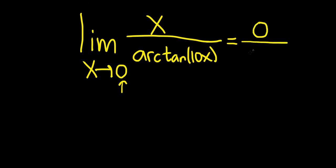And if you do it on the bottom, you get the arctan of ten times zero, so the arctan of zero. So you just get zero over, well the arctan of zero is zero, so you get zero over zero.